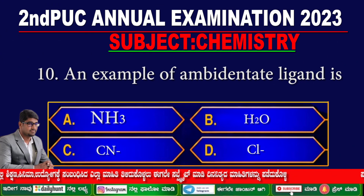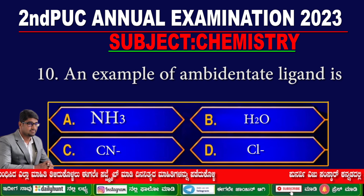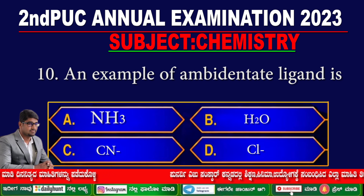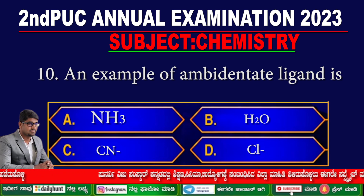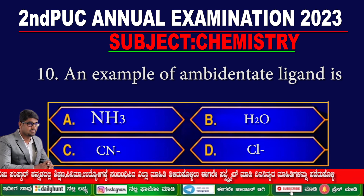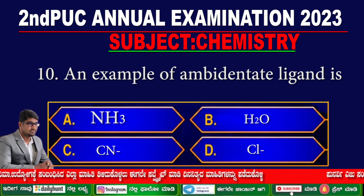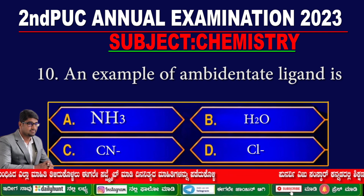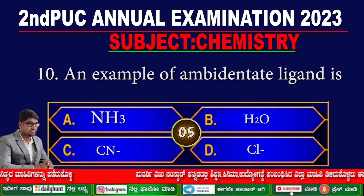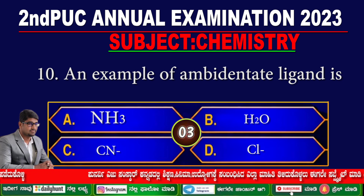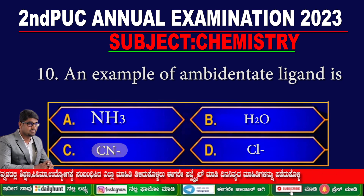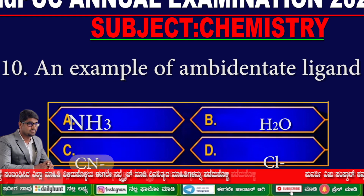Question 10. An example of an ambidentate ligand is — option A: NH₃, option B: H₂O, option C: CN⁻, option D: Cl⁻. Your time starts now. The correct answer is option C: CN⁻.